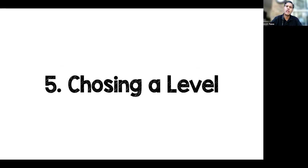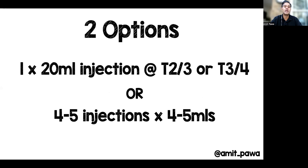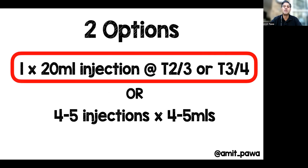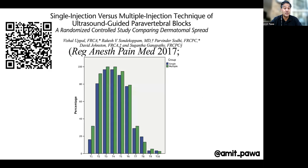How about what level to choose? The key is to choose the level at the midpoint of your surgical insult. For breasts I tend to pick a single level at T2-T3 or T3-T4, but you could also aim to do four to five injections over related dermatomal coverage. My preferred technique is a single injection of 20 mls at about T2 or T3 for breast surgery.